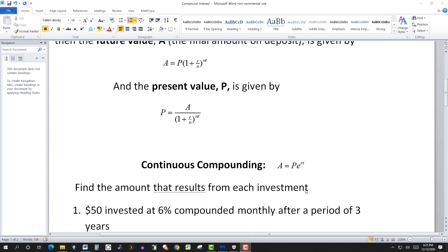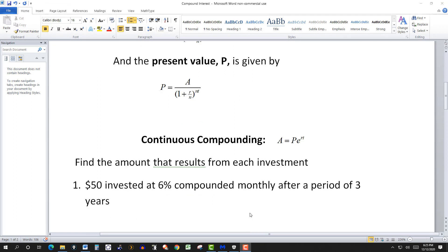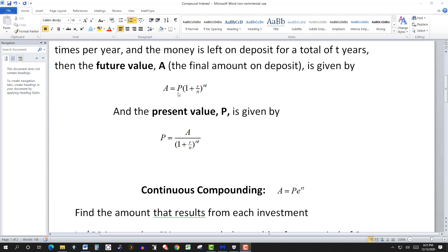Find the amount that results from each investment. For the first one, we have $50 invested at 6% compounded monthly, so N will be 12, after a period of three years. We just plug into the first formula here.